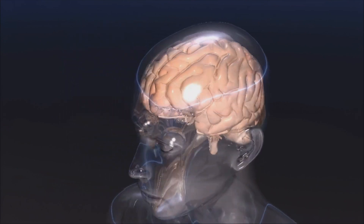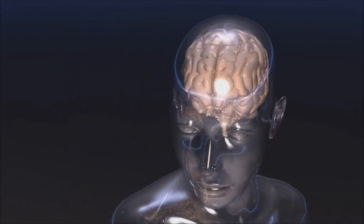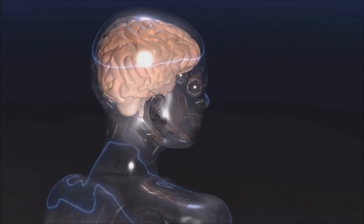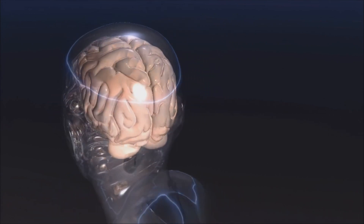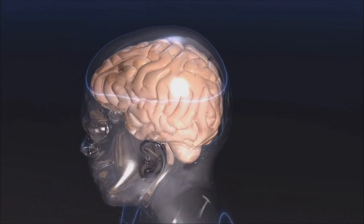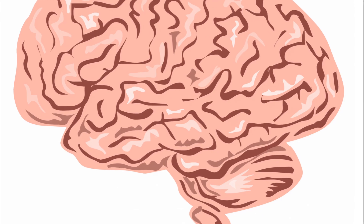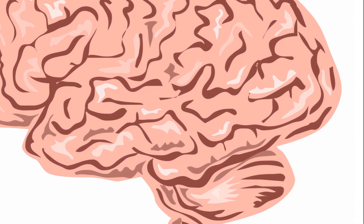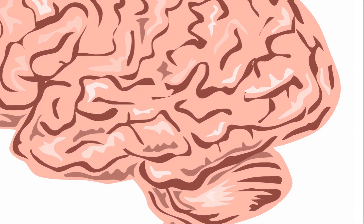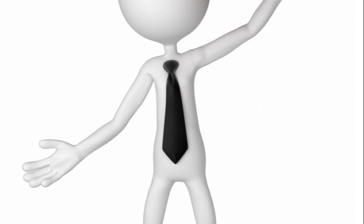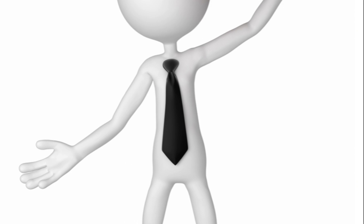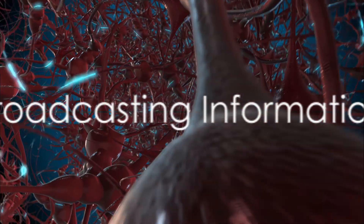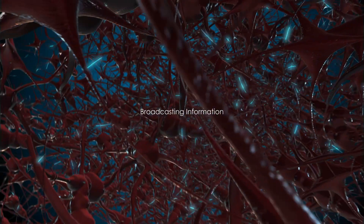So, like a well-coordinated theatre production, our consciousness operates in a similar manner according to the Global Workspace Theory. It offers us a unique perspective of how our brain functions, where some processes take center stage in our consciousness while others work behind the scenes. This theory serves as a valuable framework to understand how different brain processes contribute to our conscious experience.